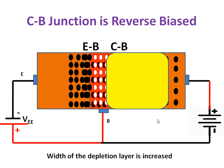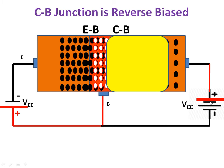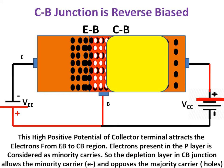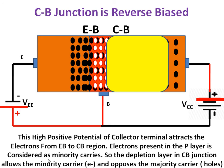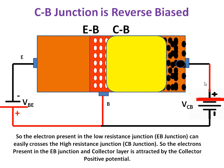The collector potential is very much greater than the emitter potential. This high positive potential at the collector terminal attracts all the electrons towards the collector. The depletion layer at the collector-base junction allows minority carriers (electrons in the p layer) to pass through and opposes majority carriers. So these electrons reach and are collected by the collector terminal, which determines the current flow direction.